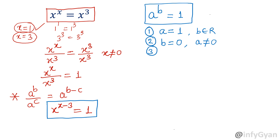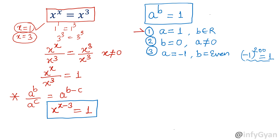Third case: if the base a is negative 1 and the exponent b is an even number, the right side will come out 1. For example, minus 1 raised to the power 200 — b is even, a is negative 1 — equals 1. So normally we know cases one and two: base is 1, or exponent is 0. The third case I am adding here: base is negative 1 and the exponent is even.